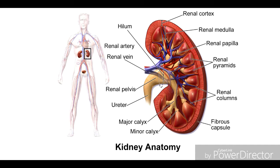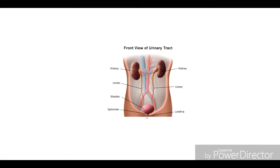The urinary bladder is a sac-like structure located in the pelvic and abdominal region. It is helpful to store 400 to 700 ml of urine. The urethra is a neck-like structure at the base of the urinary bladder, measuring 2 to 4 cm in size.